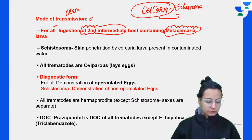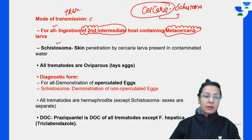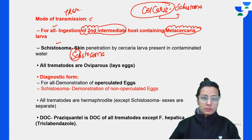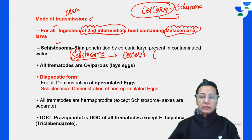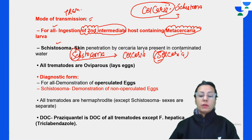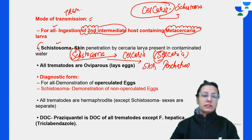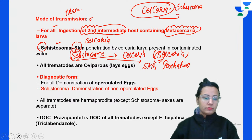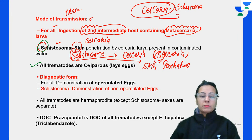Just remember: Schistosoma (S4S) is an exception - it has cercaria as the infective form, not metacercaria. Another S4S exception: it is by skin penetration by the cercaria - this is an important exam question. All trematodes are oviparous - they lay eggs - and the diagnostic form for all of them is the operculated egg.